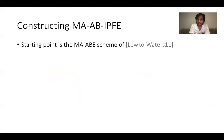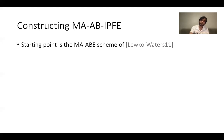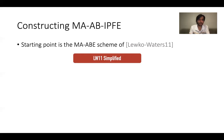How do we construct such multi-authority AB-IPFE schemes? One could start with the Abdallah et al. construction, but due to technical reasons, it cannot be made into a multi-authority scheme directly. Instead, we look back at the older Luco-Waters construction, which built multi-authority attribute-based encryption schemes from bilinear maps for monotone span programs, without function encryption properties. We then modify this construction to add the IPFE capability. Let me give a simplified overview of the Luco-Waters construction.